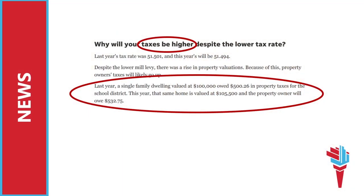Another area that can be confusing is how the mill rate impacts homeowners. The two main things that impact property taxes are property valuations and the mill rate. The example in the article is intended to show that even with a decrease in the mill rate, an increase in property values could still result in increased taxes. However, using the current Kansas funding formula, this is not an accurate calculation of the taxes for this homeowner. So let's take a closer look.